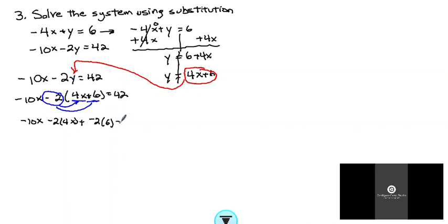So here we have negative 10x equals 42. This is negative 10x minus 8x minus 12 equals 42.